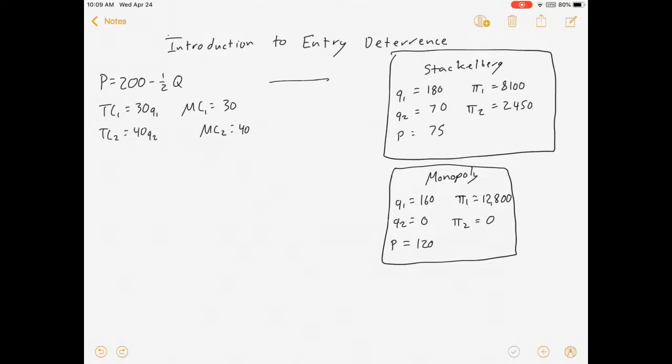I had all of this information in that market. There was our demand curve, there's our cost functions. Pretty standard stuff. Spoiler alert for if you haven't seen that video, there's how it ends. Very exciting stuff. Q1 is $180, Q2 is $70, profits are $8,100 and $2,450.